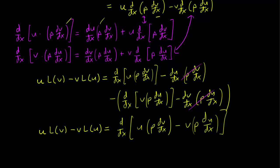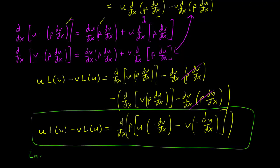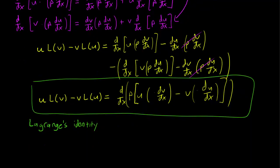We can factor out the p as well. This is a formula known as Lagrange's identity. This seems a bit unnecessary, but as we will see in the coming videos, it's going to be very useful.